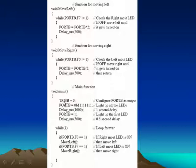In the main program, in the first line, TRISB equals zero. This instruction is set to configure port B as output, because we are using all the pins of port B as output to get a voltage to the outside. We are not going to input any voltage to the microcontroller. After setting all the pins of port B as output, then turn on all the LEDs. This is an additional line before we start the nitrider pattern.